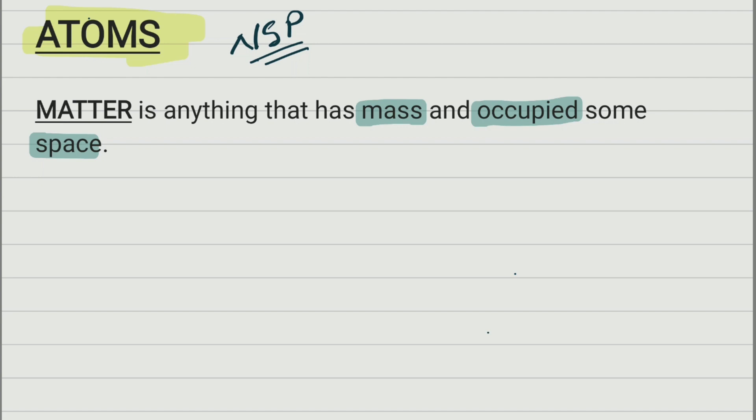Objects are part of matter, and those objects are made of different types of matter. For example, if you have a cardboard it is made of wood; a nail is made of metal, of iron for instance. So different parts of matter are called objects, and objects are made of different materials or different types of matter. You also learned in previous grades that all matter is made of atoms.